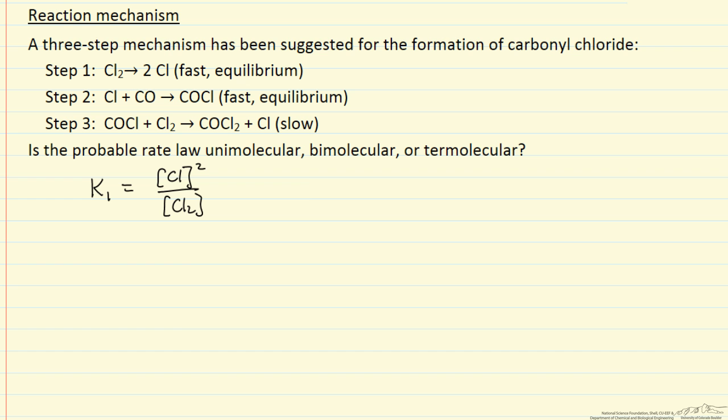The second step is also an equilibrium, so that means there's another equilibrium constant that says this concentration, this intermediate COCl, divided by the concentration of chlorine atoms and CO molecules, has this equilibrium relationship.